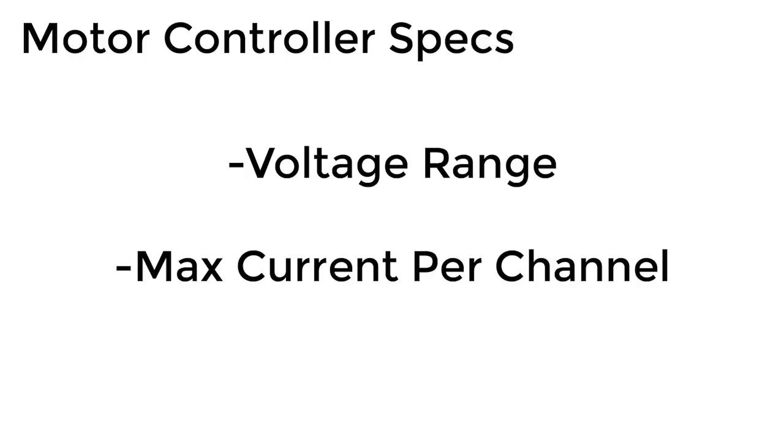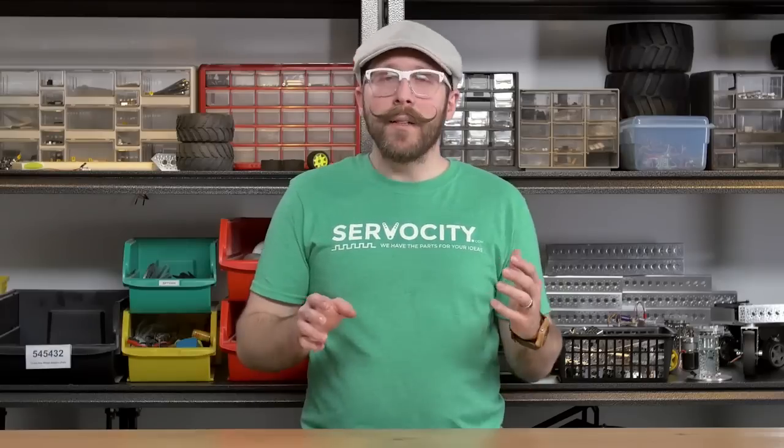When you look at max current per channel, there's usually going to be a continuous rating and a peak rating. The peak is how much max current it can handle for a very short burst of time, whereas continuous is how much it can handle continuously. The best practice is to have a motor controller that can handle the motor's stall current continuously, if you want to ensure you never blow out your motor controller.